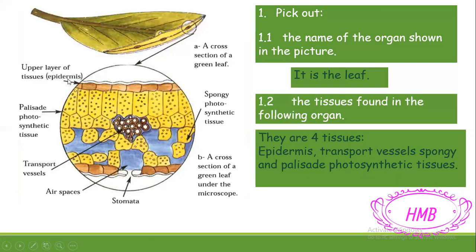As you can see, the epidermis is the upper layer — the one we touch on any leaf. The spongy and palisade photosynthetic tissues, from their name 'photosynthetic,' are related to photosynthesis, so they help the plant make its own food. You are not responsible for knowing their function in detail. The transport vessels, from their name, are tissues for transportation — they transport certain materials in the plant.